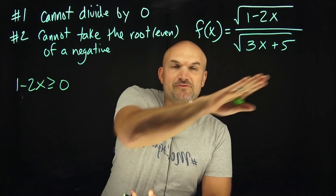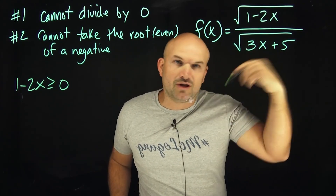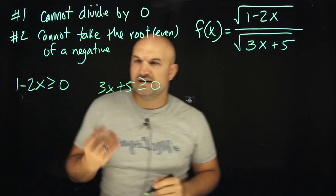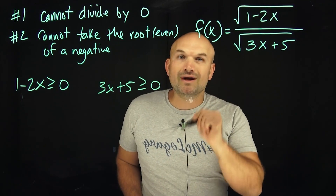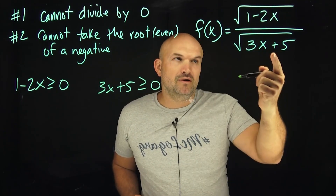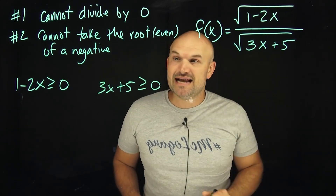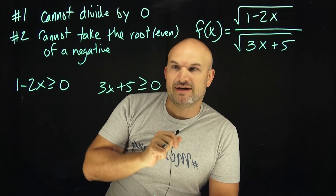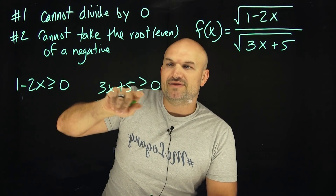What can we do to combine our two restrictions down here? We know whatever's under this radical also has to be greater than or equal to zero, so we could say 3x plus 5 has to be greater than or equal to zero. But the key is: what's the problem if my denominator is equal to zero? Then the square root is going to be zero, which means zero is going to be the denominator — and we know you cannot divide by zero. The simple little trick is, whenever you have a radical in your denominator, rather than setting your radicand greater than or equal to zero, just set it greater than zero.